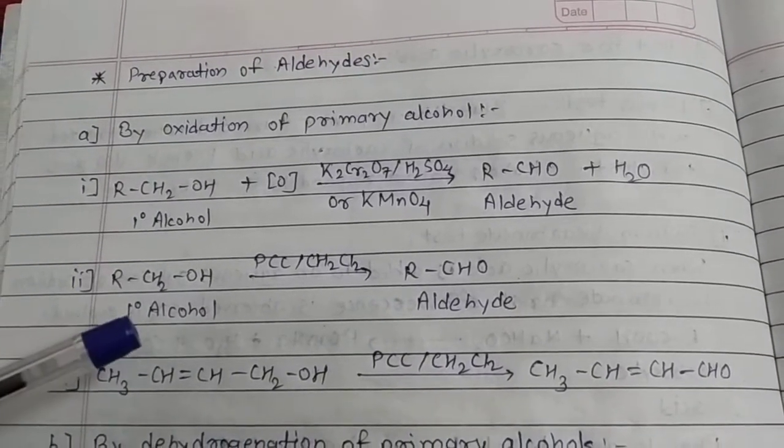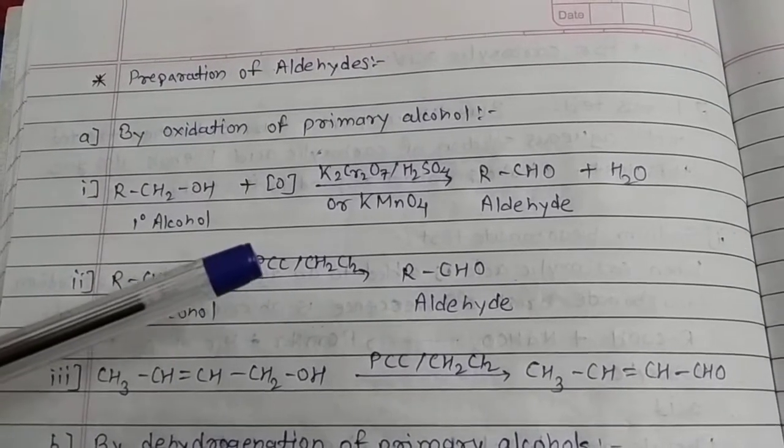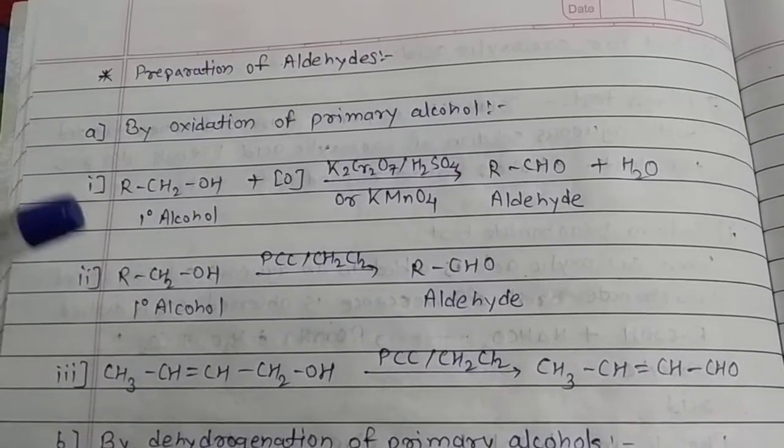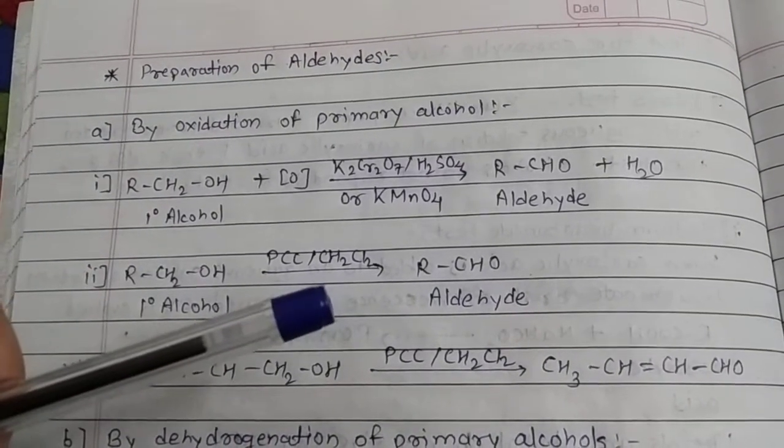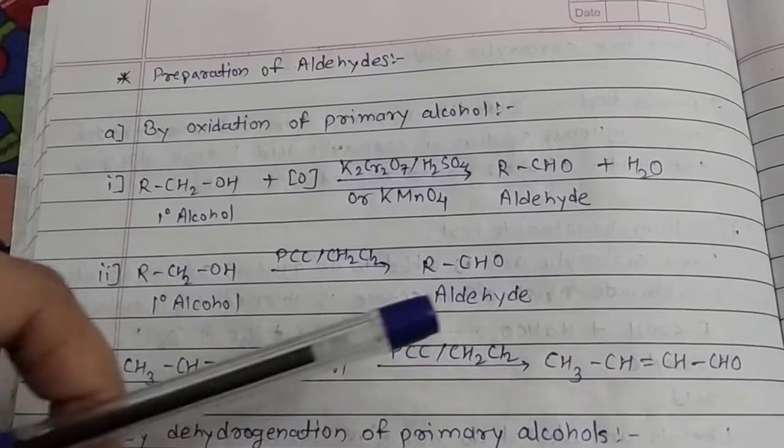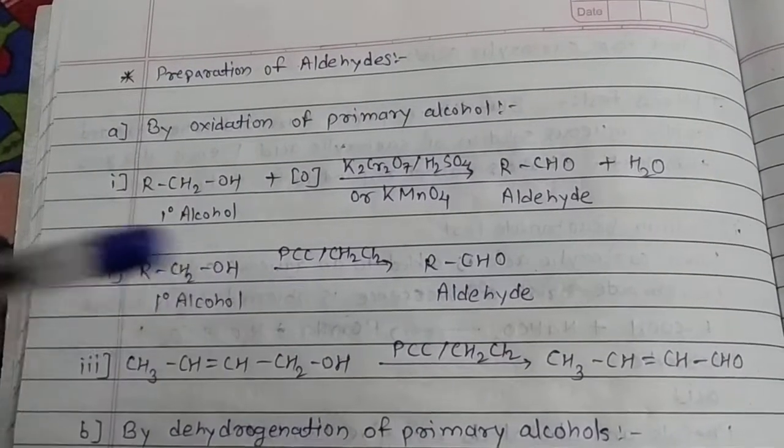Similar reactions are given here. Instead of potassium dichromate or permanganate, PCC is used, that is pyridinium chlorochromate. Methylene chloride is the solvent. Primary alcohol gets converted into aldehyde by using PCC in methylene chloride.